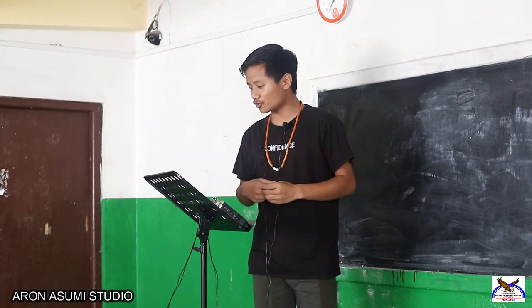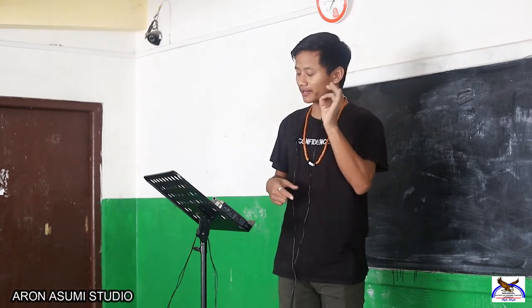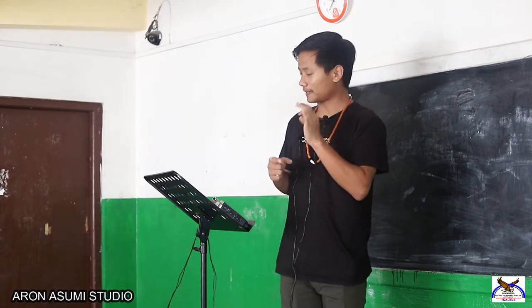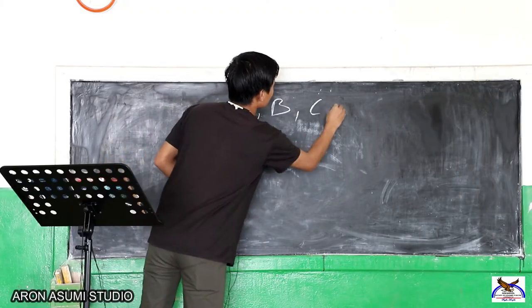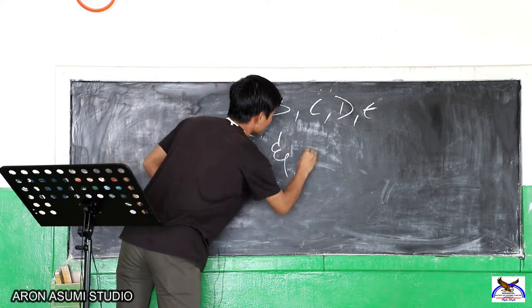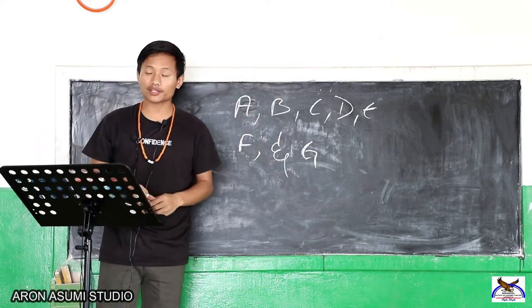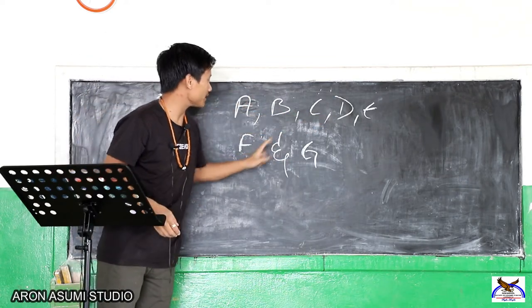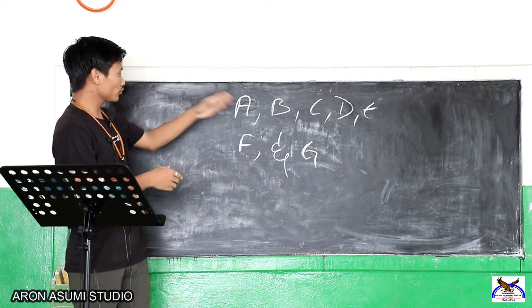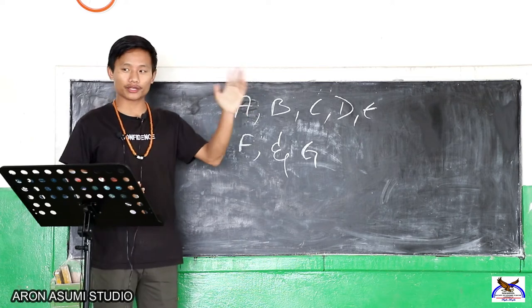The first thing you should know is that in music, we do not use all the alphabets. We use only specific ones. As you can see, there are 26 alphabets, but in music we use only A, B, C, D, E, F, and G. We don't use more than that or less than that. These are the only alphabets you will be using.